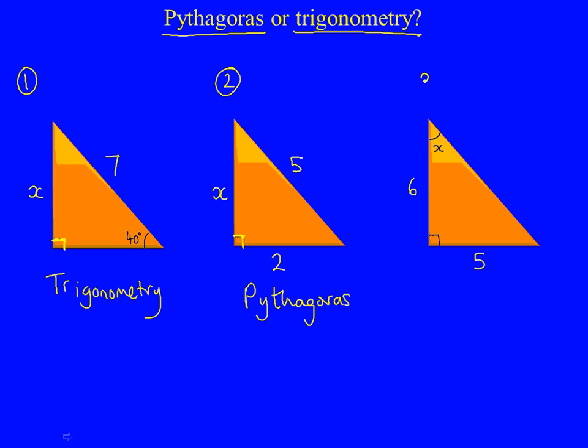And the third and final question, it's a right angle, so we can use Pythagoras or Trigonometry, but we're looking for the angle, so there is an angle in the question. So when we're looking for the angle, or there is an angle in the question, we again use Trigonometry.